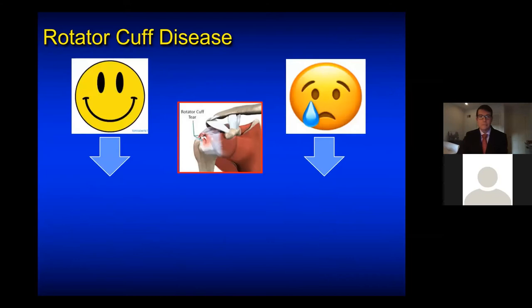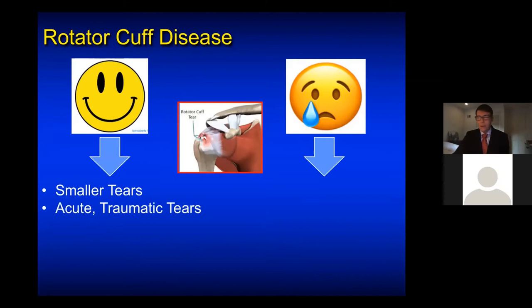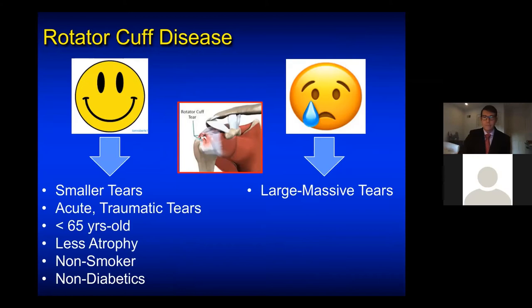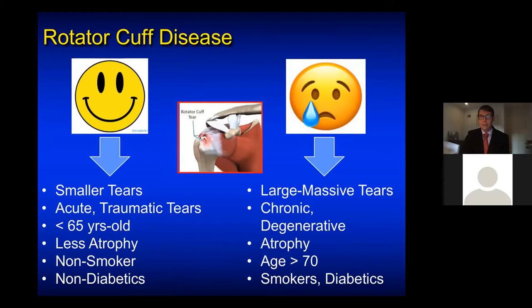When it comes to surgery, smaller tears that are acute and traumatic in patients under 65 years of age with less atrophy, who are non-smokers and non-diabetics — these patients will do quite well with surgery to fix a full thickness rotator cuff tear. Who does not do as well? Large and massive tears that are chronic and degenerative with atrophy in patients over the age of 70, with a lower healing potential, and patients who smoke or have diabetes, which also lower healing potential.